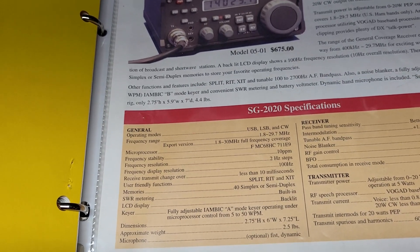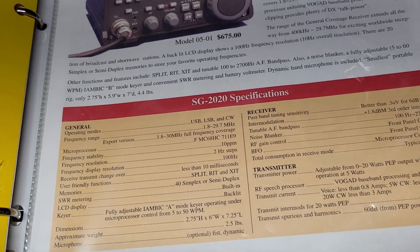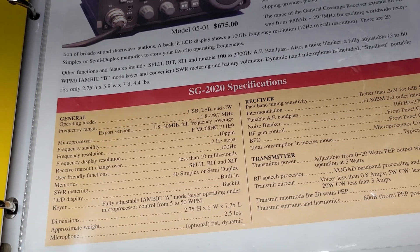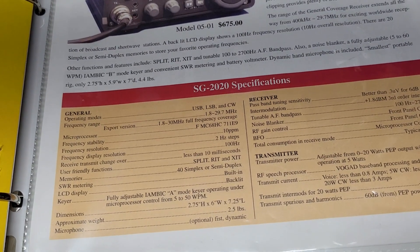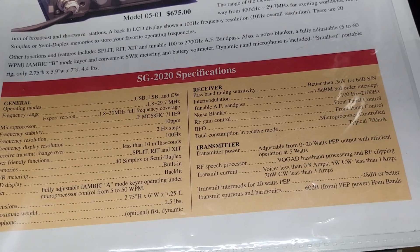Looking at the specifications, the transmitter is adjustable from 0 to 20 watts PEP output with efficient operation at 5 watts. That's what it says right there.